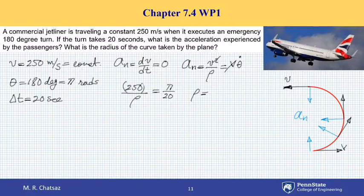So that is 5000 over pi. If you take a calculator and divide, the radius of curvature turns out to be 1592 meters if I round to the whole number. That's approximately close to a mile.